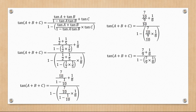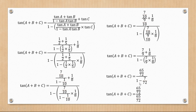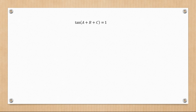Seven over ten divided by nine over ten gives seven over nine, then plus one over eight. On the bottom, seven over nine times one over eight gives seven over 72. Finding the LCM at the top gives 65 over 72 in the numerator. One minus seven over 72 gives 65 over 72 in the denominator. Since the numerator and denominator are identical, dividing them gives one, which equals tan pi over four.